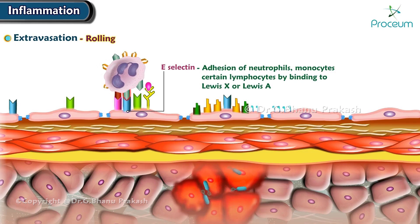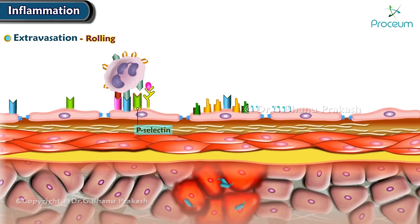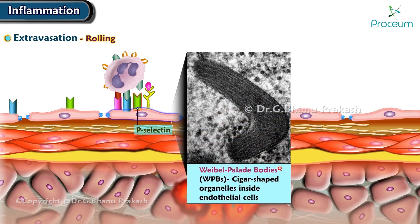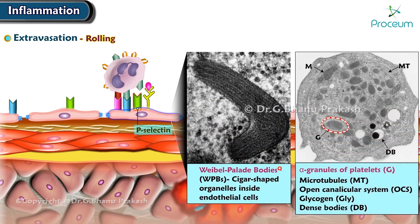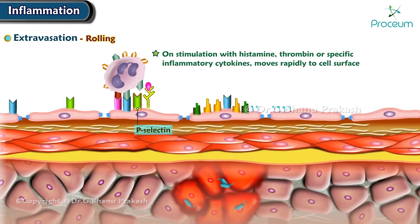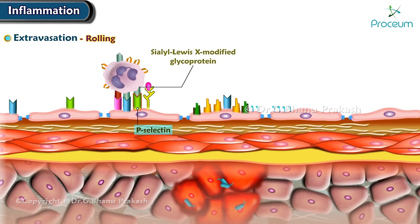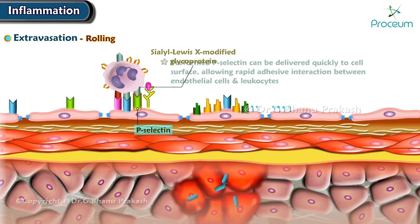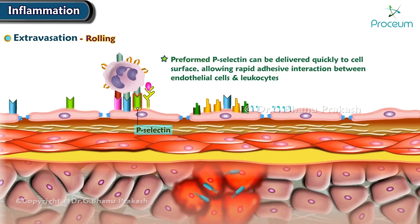E-selectin mediates the adhesion of neutrophils, monocytes, and certain lymphocytes by binding to Lewis-X or Lewis-A. P-selectin is preformed and stored in Weibel-Palade bodies of endothelial cells and alpha granules of platelets. Upon stimulation with histamine, thrombin, or specific inflammatory cytokines, P-selectin moves rapidly to the cell surface, where it binds with sialyl-Lewis-X on leukocyte surfaces. Preformed P-selectin can be delivered quickly to the cell surface, allowing rapid adhesive interaction between endothelial cells and leukocytes.